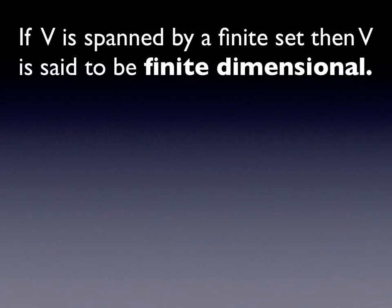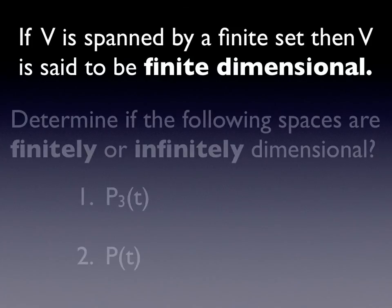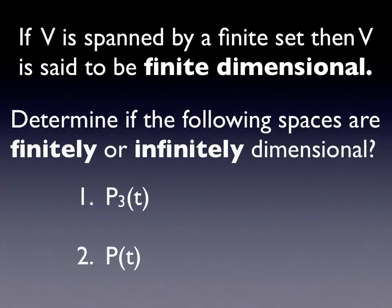If V is spanned by a finite set, then V is said to be a finite dimensional space. What we mean is that if you can find a finite number of vectors that span a vector space, then that vector space is said to be finitely dimensional. Otherwise, it's infinitely dimensional.